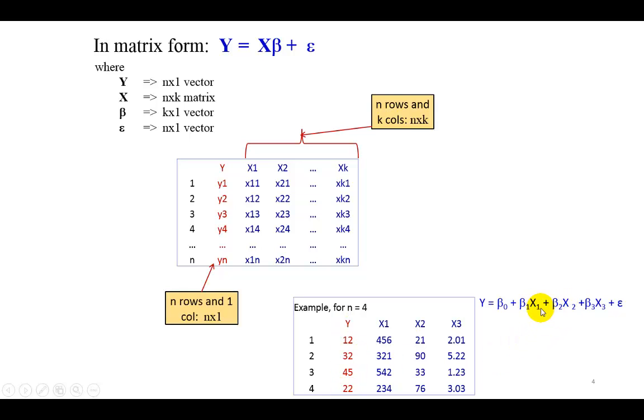In the case where we have three independent variables, the beta coefficient would be a 4 by 1 vector. And so X would actually, in this example, be a 4 by 4 matrix.